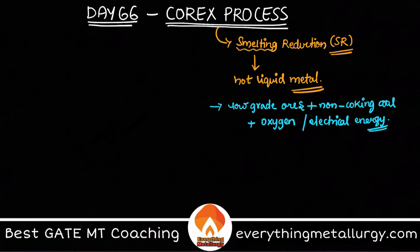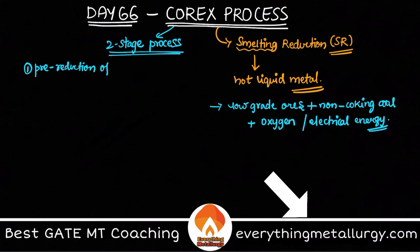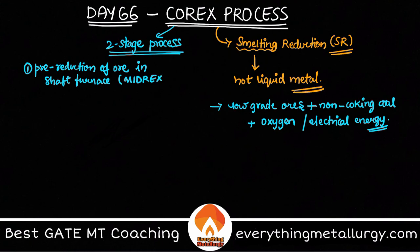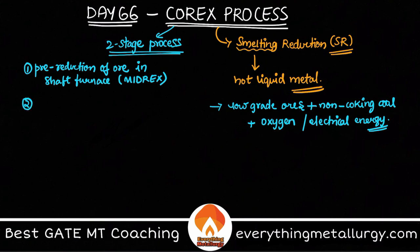Now let's see the schematic of how the COREX process is actually done. This is a two-stage process. Number one, you go for pre-reduction of the ore particles, which is usually done in a shaft furnace — typically a MIDREX shaft furnace, which is a gas-based DRI (direct reduced iron) production where you convert solid ore to solid iron. The second step is to melt the pre-reduced ore in order to form hot metal and slag in a melter gasifier.